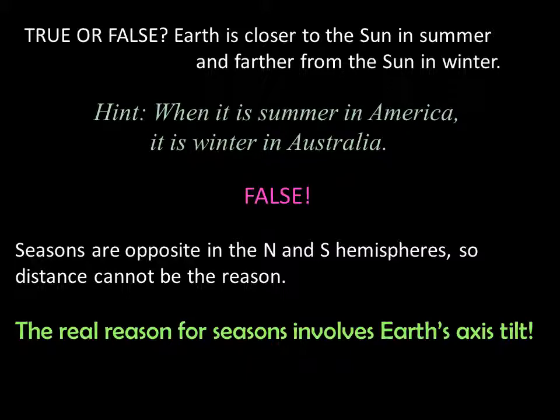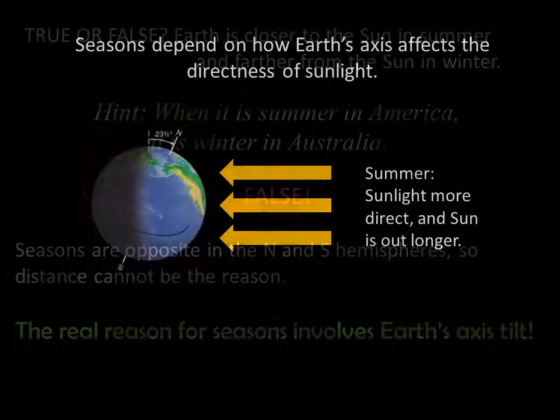The real reason for the seasons involves Earth's axis tilt. Earth is pointed at Polaris all year long, which means its orientation relative to the sun must change. If it's pointed at Polaris all year, then it certainly can't be pointed at the sun all year. In June, the northern hemisphere of Earth is tilted towards the sun and the southern hemisphere is tilted away. In December, it's the opposite.